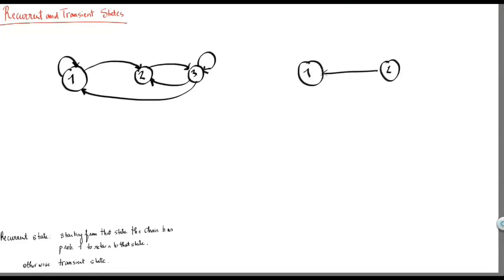This is the first chain, and the second chain will be as follows. In the first example, we can see that all the states are recurrent.